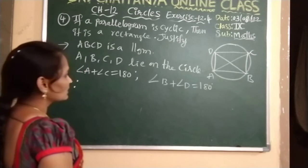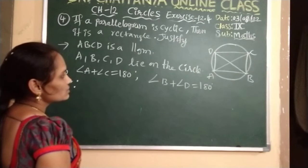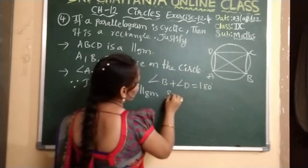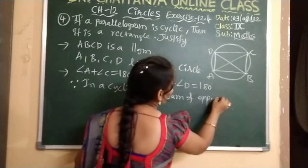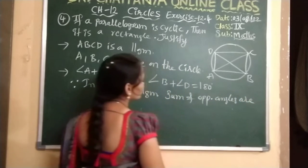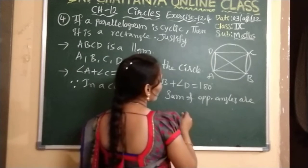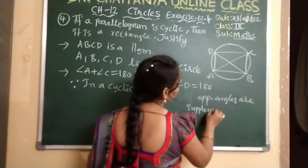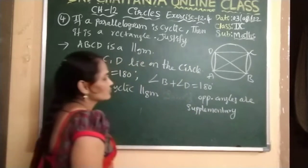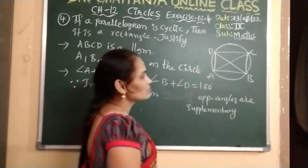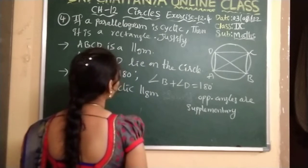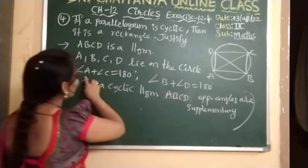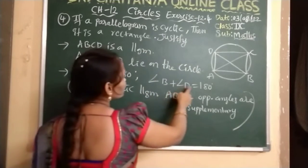In a cyclic parallelogram, the sum of opposite angles are supplementary. So based on this reason, I took: angle A plus angle C equals 180, and angle B plus angle D equals 180.